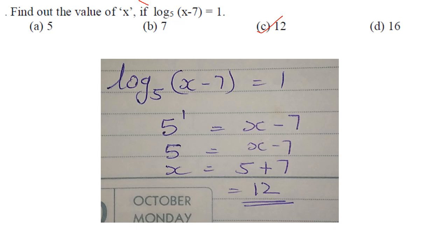Find the value of x if log₅(x - 7) = 1. So 5¹ = x - 7, which gives 5 = x - 7, thus x = 12. Answer is option C.